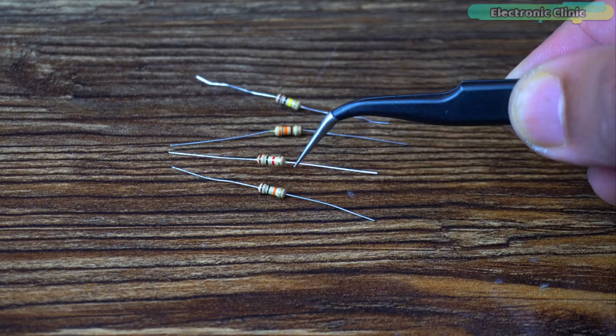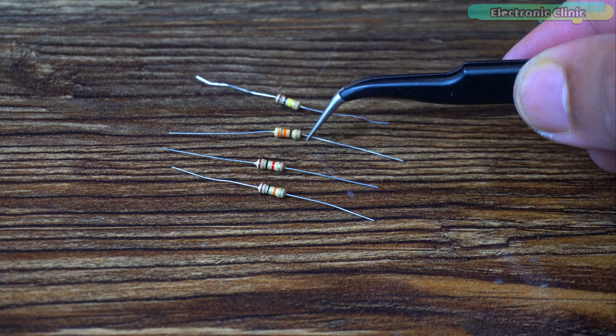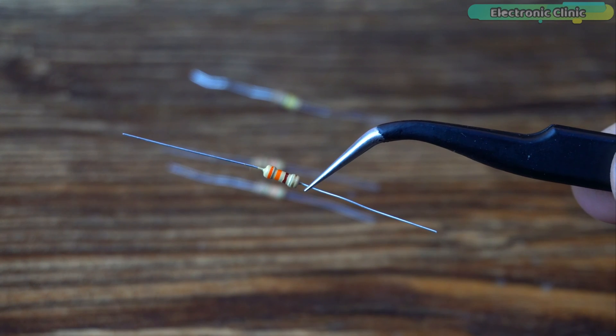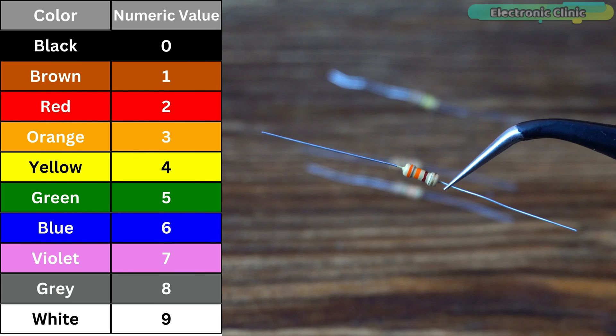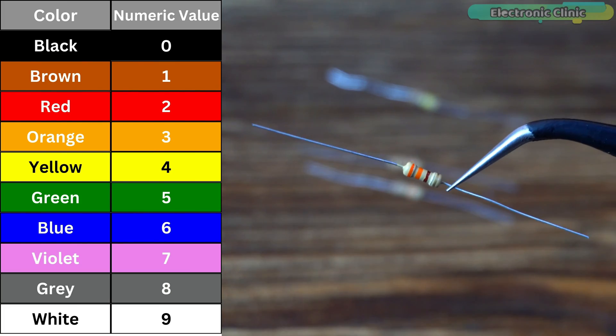Let's read another one. The bands are orange, orange and black. Orange equals three and black equals zero. So it's 330 ohms.